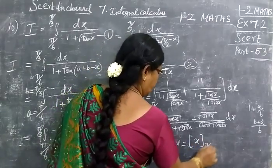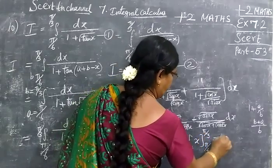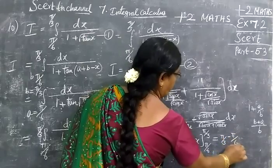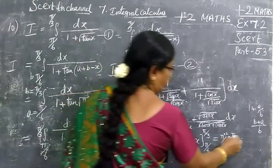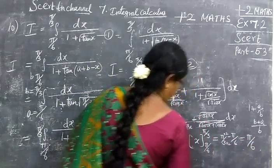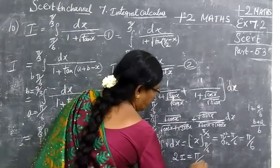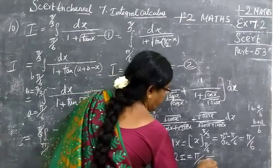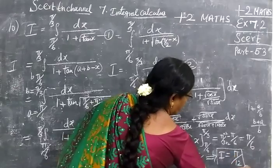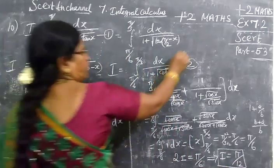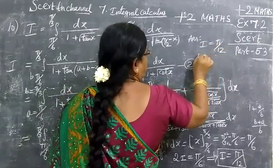The integration of 1 is x. Applying the limits from π/6 to π/3: upper limit minus lower limit, multiplied into 2. So 2I equals π/3 minus π/6, which gives 2I equal to π/6. Which implies I equals π/12.